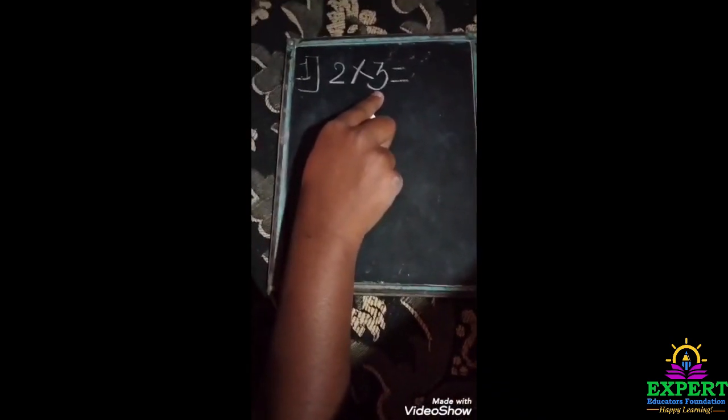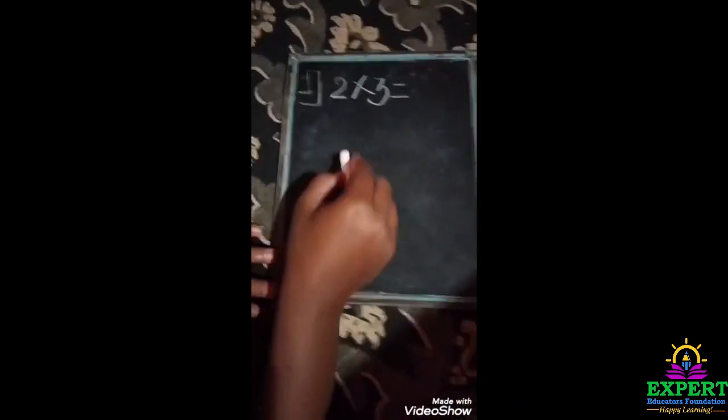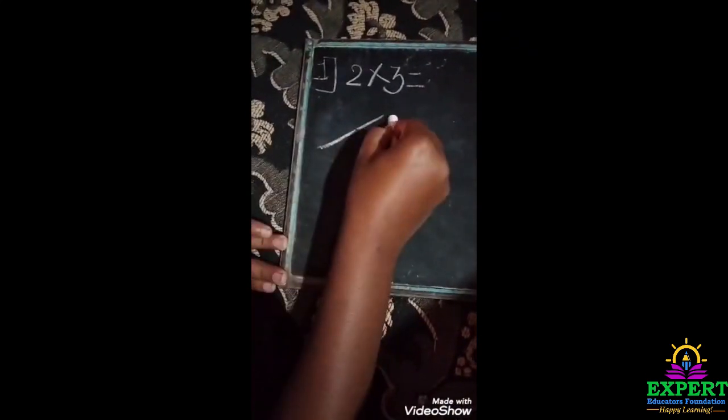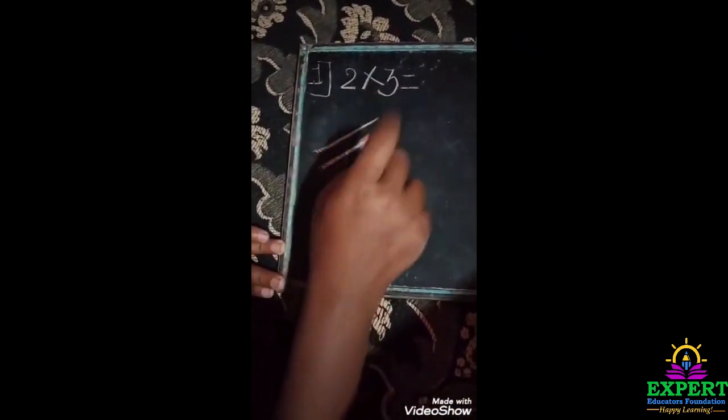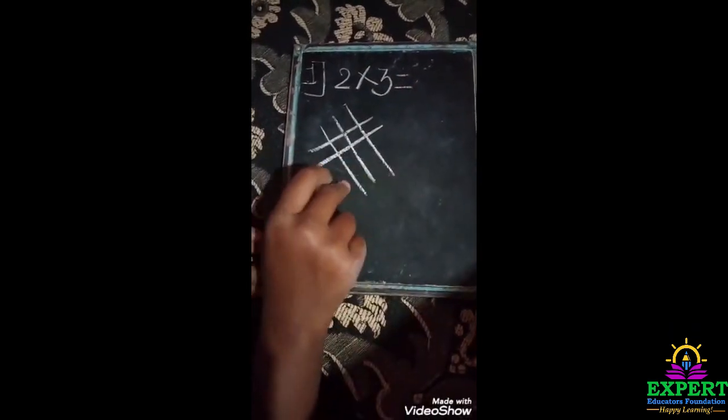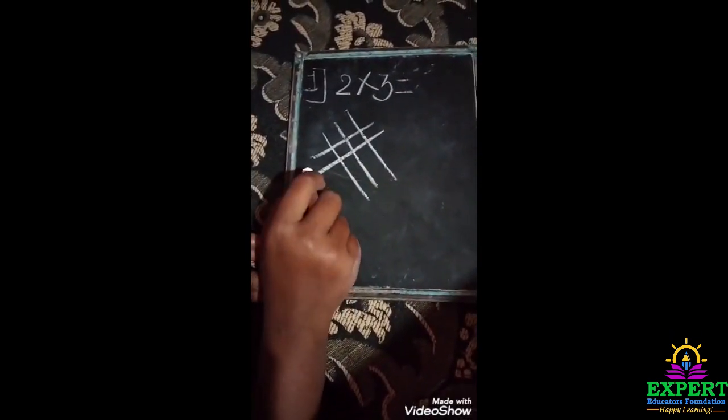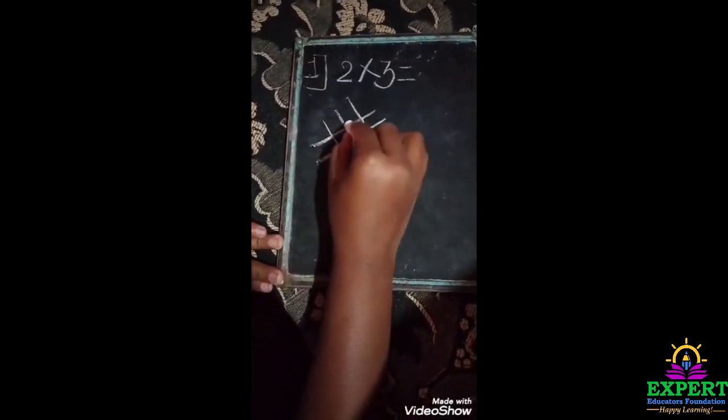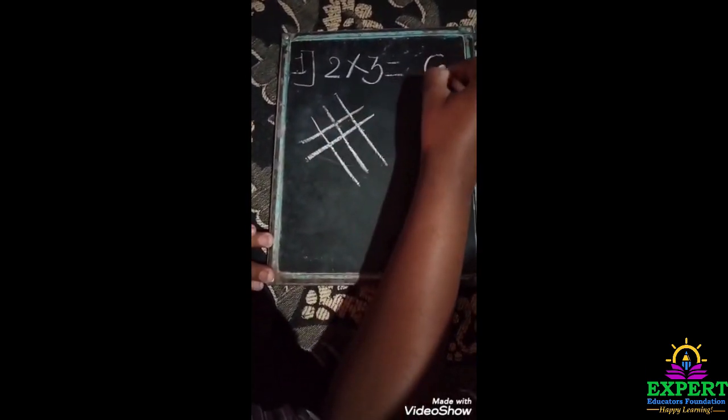So we have to draw here two lines, one two, and three means three lines, one two three. So here all lines bisect each other how many times? One, two, three, four, five, six. So the answer is six.